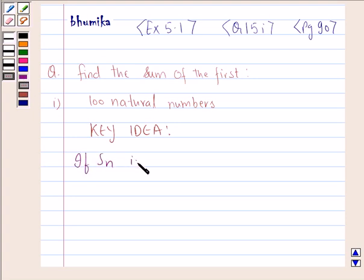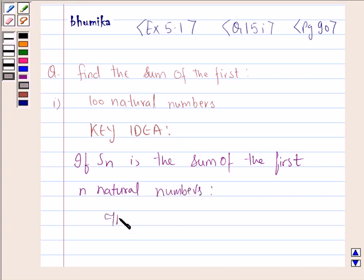If Sn is the sum of the first n natural numbers, then Sn is equal to n by 2 times 2A plus n minus 1 into D.